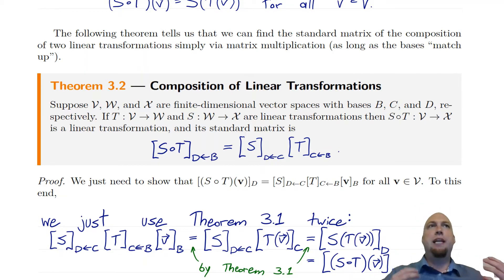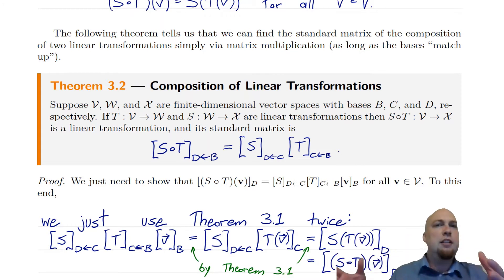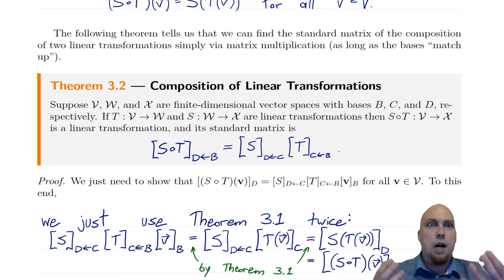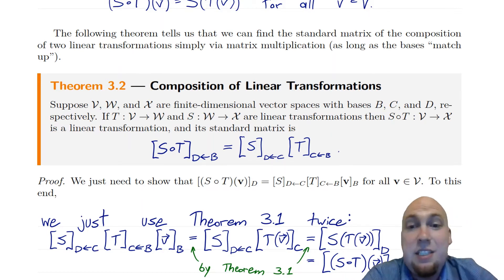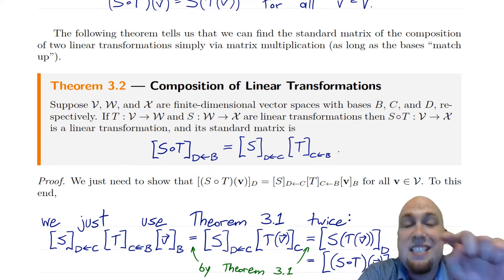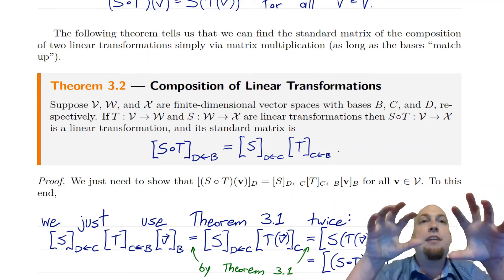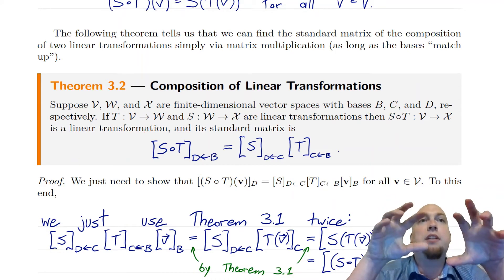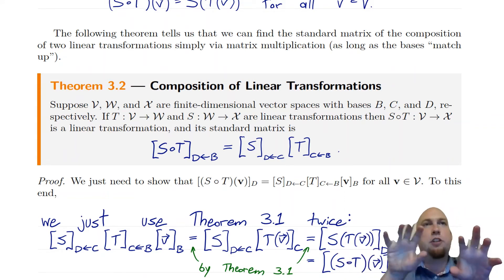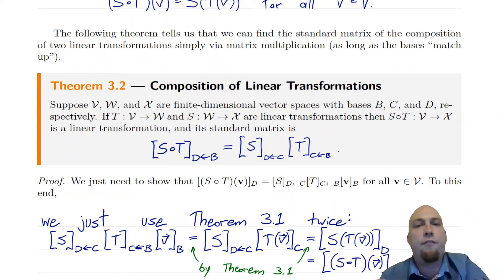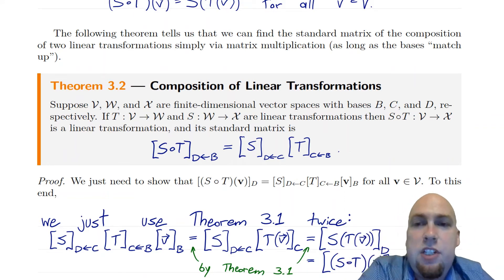Remember, matrix multiplication, when you were first introduced to it, it has this weird, long, ugly formula. Maybe you were wondering why matrix multiplication is defined in that way rather than just entry-wise or something like that. The answer is because we want this theorem to hold — we want matrix multiplication to correspond to doing one thing and then doing another thing. Doing linear transformations one after another is what matrix multiplication does.